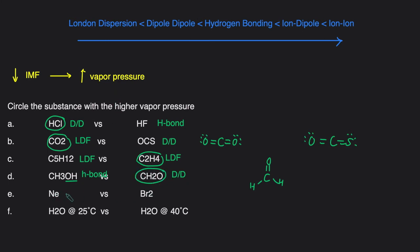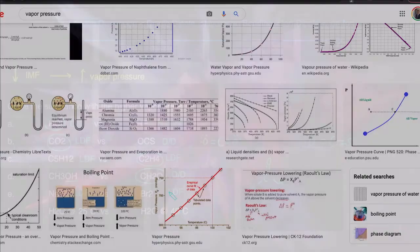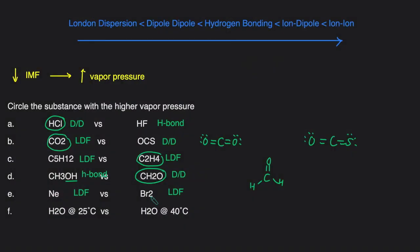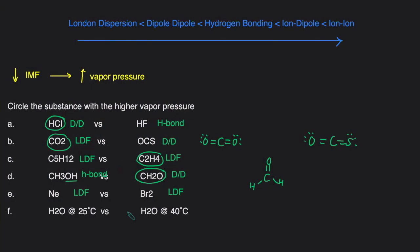Neon versus Br2: both of these are nonpolar. When you have a single element, that's nonpolar with London dispersion forces. And when you have a compound made of one type of element, that's also nonpolar because it has the same electronegativity throughout. Since they're both nonpolar and both have only London dispersion forces, we look at molar mass to determine which is smaller. Neon's molar mass is about 20 and bromine's molar mass is about 80 times 2, which is 160. Since neon has the lower molar mass, it has weaker London dispersion forces and therefore higher vapor pressure.